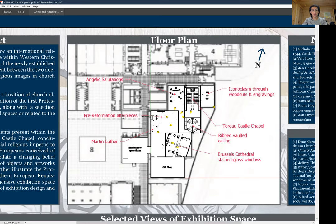Then we go into the pre-Reformation altarpieces. Altarpieces were really significant religious iconography throughout much of European Christian history at this point. This section really shows the transition between these ornate, overt religious objects being painted and depicted, and how the Protestant Reformation may change that — serving as a kind of preamble to many of those artworks.